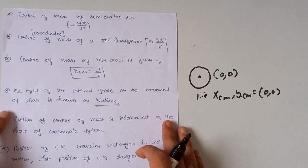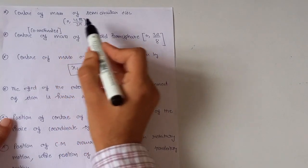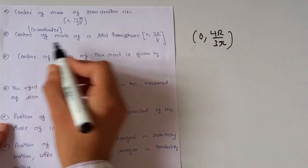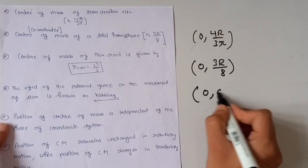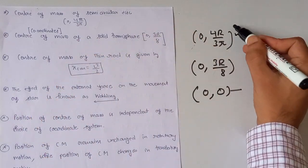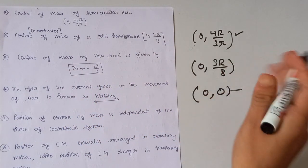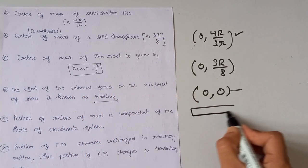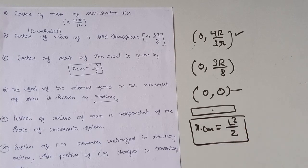The coordinate of the center of mass of a semicircular disk is (0, 4r/3π), where r is the radius of the disk. The coordinate of the center of mass of a solid hemisphere is (0, 3r/8). The center of mass of a thin rod of length L is given by L/2.